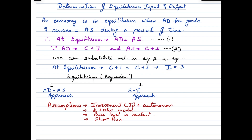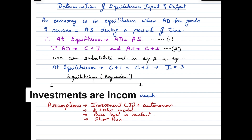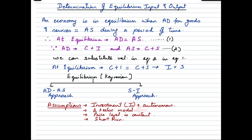Under Keynesian theory, macroeconomic equilibrium in the short run can be attained through two approaches: the AD-AS approach (aggregate demand–aggregate supply approach) and the savings-investment approach. Our assumptions are: investment is autonomous or independent of the level of national income and remains constant; we study under the two-sector model with households and firms; price level is assumed constant; and we study it from a short-term perspective.